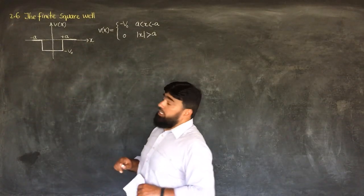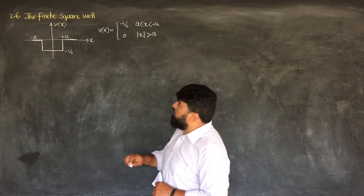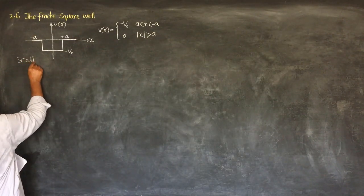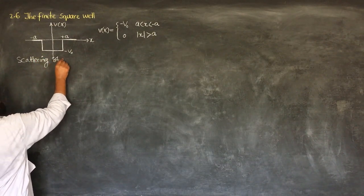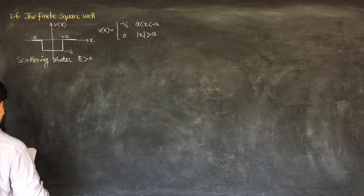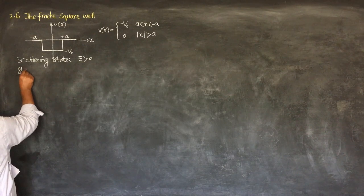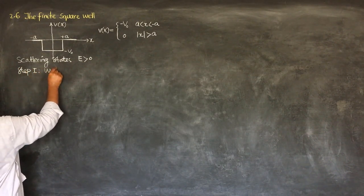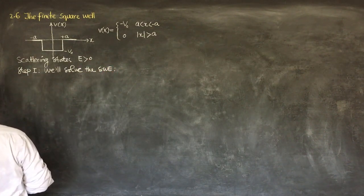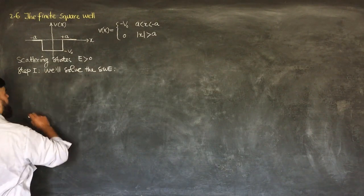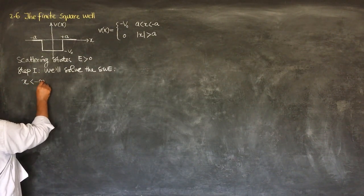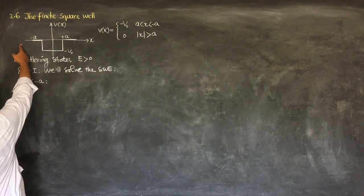Starting again with the finite square well — we have studied the bound states under this potential, and now we will be starting with the scattering states. For scattering states we will take energy as positive; it will no longer be bound. In step 1 we will solve the Schrödinger wave equation. For the region where x is less than minus a, we have no potential.